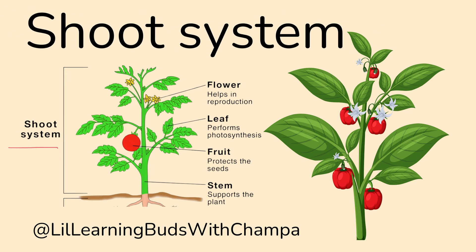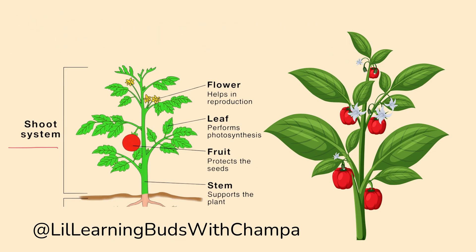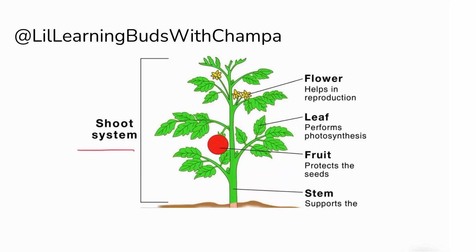The part of the plant that remains above the ground is called the shoot system. The shoot system contains flowers, leaves, fruits, and stem.